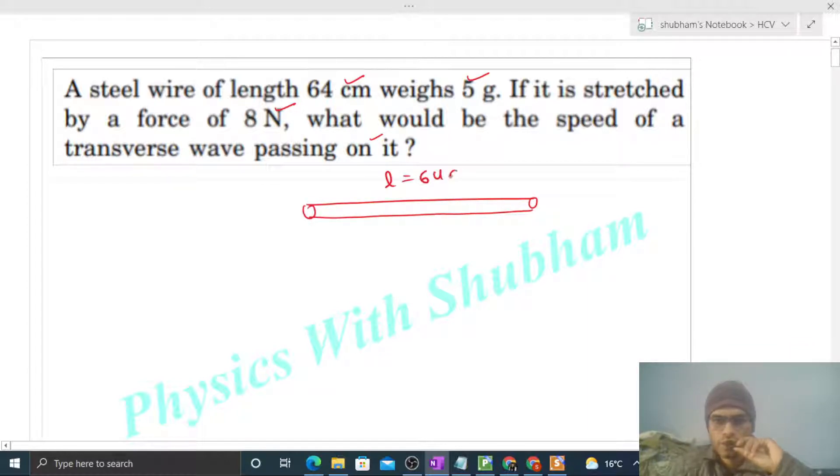Fine, so we have a steel wire something like this. Length of the steel wire is given 64 centimeter and mass of the steel wire is given 5 gram.